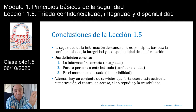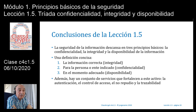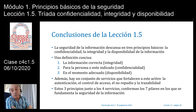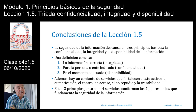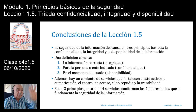Hay un conjunto de servicios que fortalecen ese activo, no solamente en forma directa a la información, sino también el entorno, la red, las máquinas donde esa información se guarda, almacena, transmite y destruye. Y son la autenticación y el control de acceso —dos cosas muy relacionadas— y el no repudio y trazabilidad —también muy relacionadas—. Estos tres principios junto a estos cuatro servicios van a conformar los siete pilares en los que se fundamenta la seguridad de la información. Es una lección bastante sencilla, muy genérica, pero que refleja definiciones de la ISO a nivel internacional.